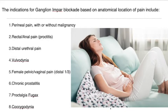Indications for Ganglion Impar blockade are based on the anatomical location of pain and include perineal pain with or without malignancies, rectal or anal pain, distal urethral pains, vulvodynias, female pelvic or vaginal pains, chronic prostatitis, proctalgia fugax and coccydynia.